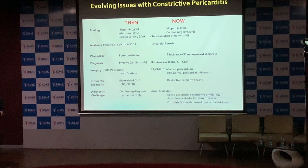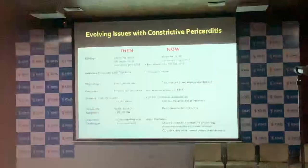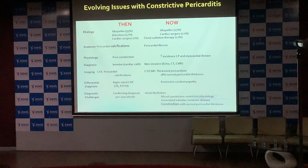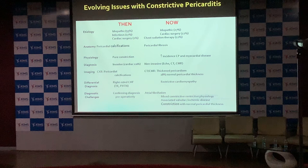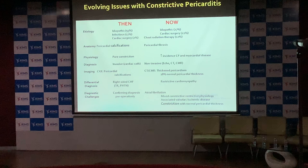Now we are wiser and have far more techniques to sort out these issues. Some patients develop atrial fibrillation in chronic constriction, which makes diagnosis a slightly different challenge. Anybody presenting with atrial fibrillation — one of the etiologies to keep in mind is constrictive pericarditis, though it is also common in restrictive cardiomyopathy.